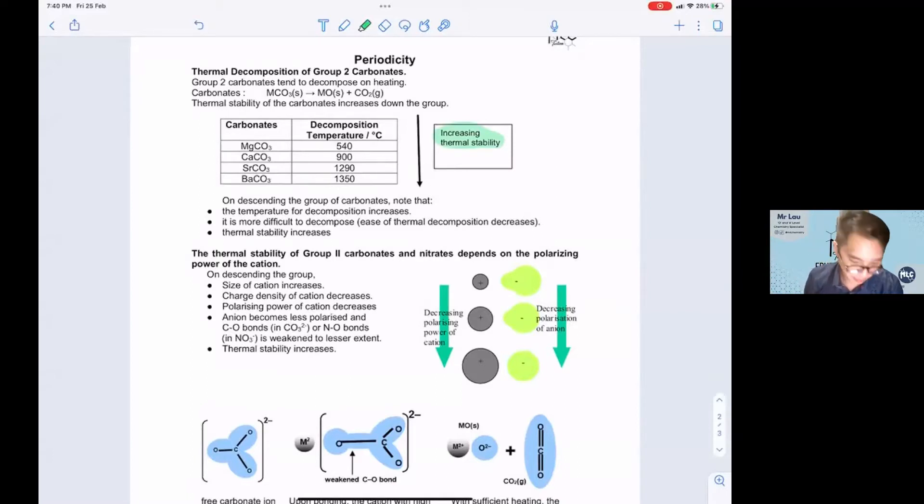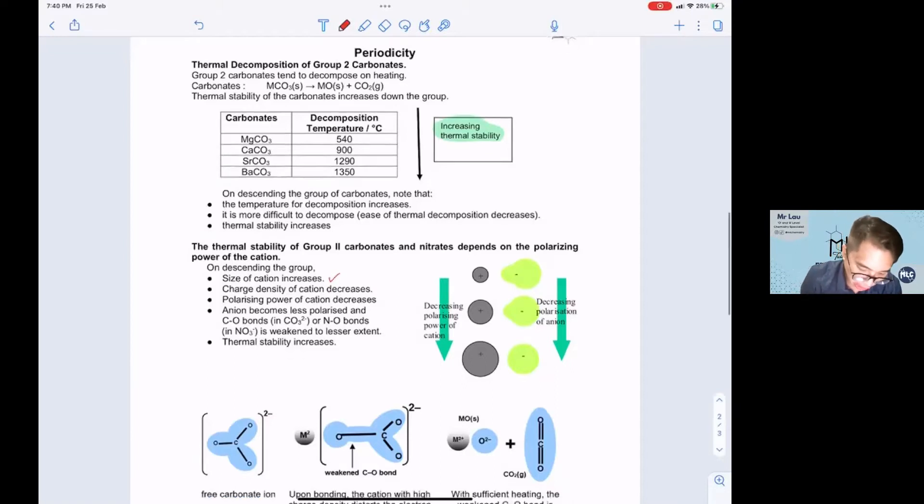Now let's look at why this happens. Down the group, the cation size increases. As the cation gets larger, the charge density of the cation will decrease because charge density is proportional to q+/r+. If the radius increases, the charge density will decrease.